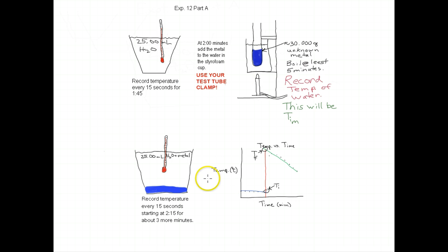You're going to then continue recording the temperature of the water. Stir the metal around, shake it around so that the water, stir the water with a thermometer, being careful not to break the thermometer. Record the temperature every 15 seconds, starting at two minutes and 15 seconds for about three more minutes.